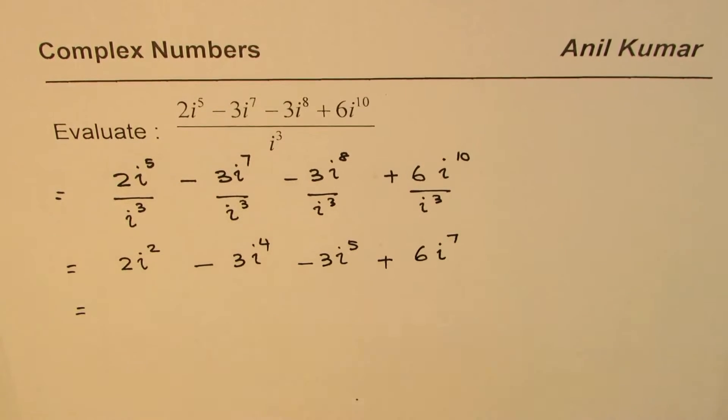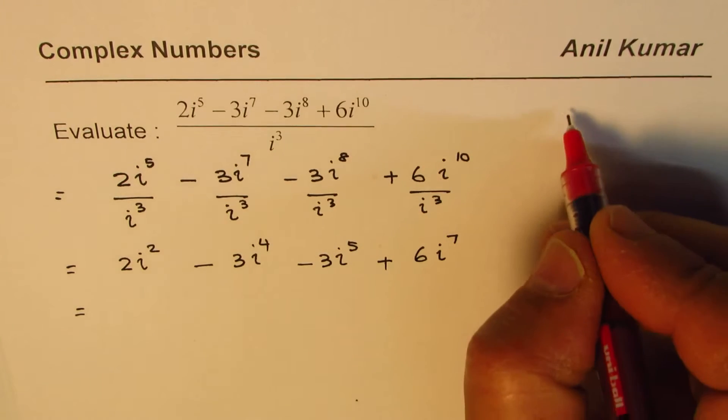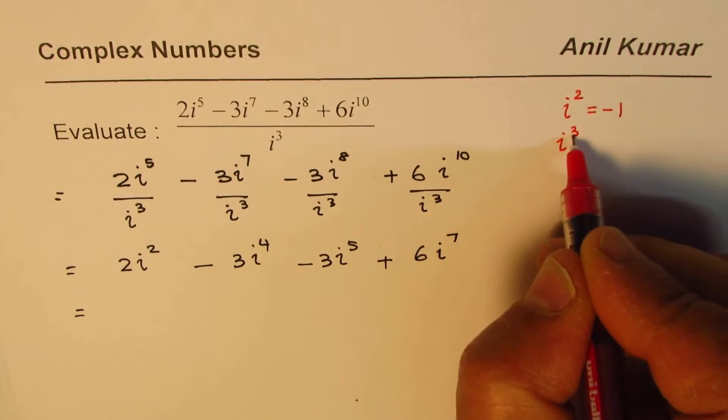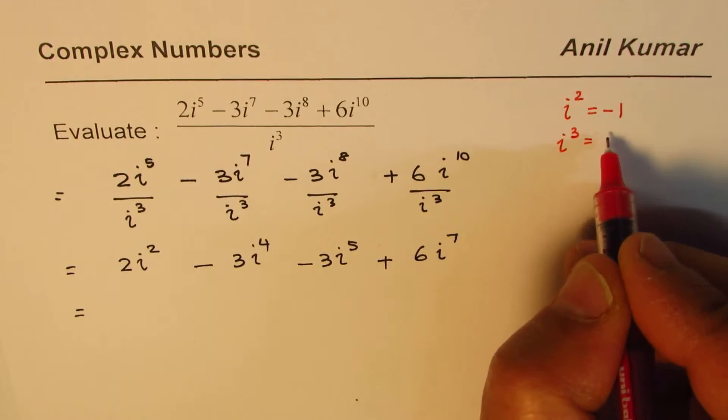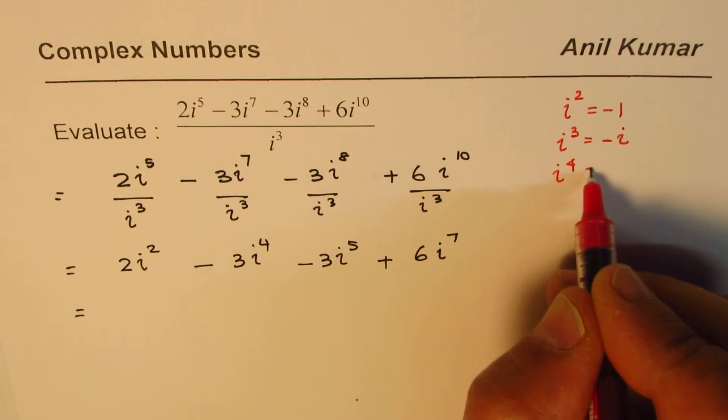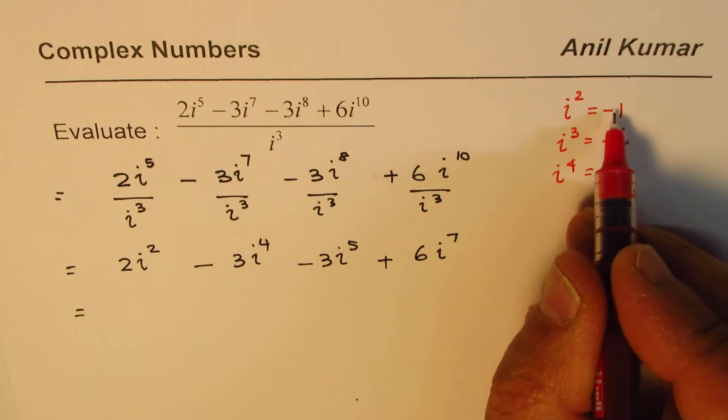Now, what is i^2? Let me write down here. i^2, as you know, is -1. i^3 is, when you times it with i, you get -i, right? i^4 is 1, square of i^2, correct?